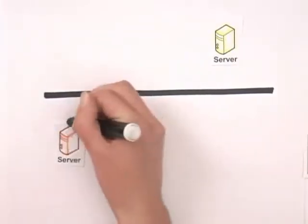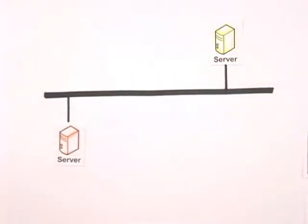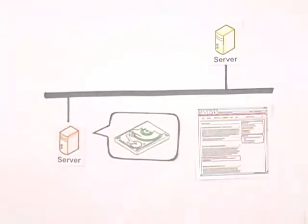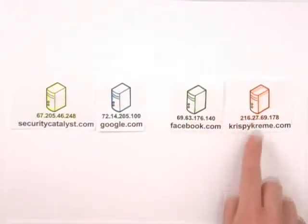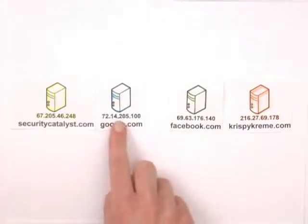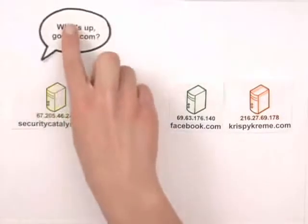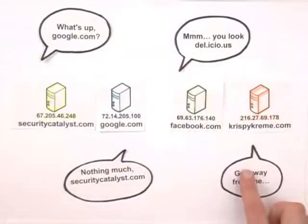The Internet is useful because two computers connected directly to this wire can communicate. A server is a special computer connected directly to the Internet, and web pages are files on that server's hard drive. Every server has a unique Internet Protocol address, or IP address. Just like a postal address, IP addresses help computers find each other. But since 72.14.205.100 doesn't exactly roll off the tongue, we also give them names like Google.com, Facebook.com, or SecurityCatalyst.com.